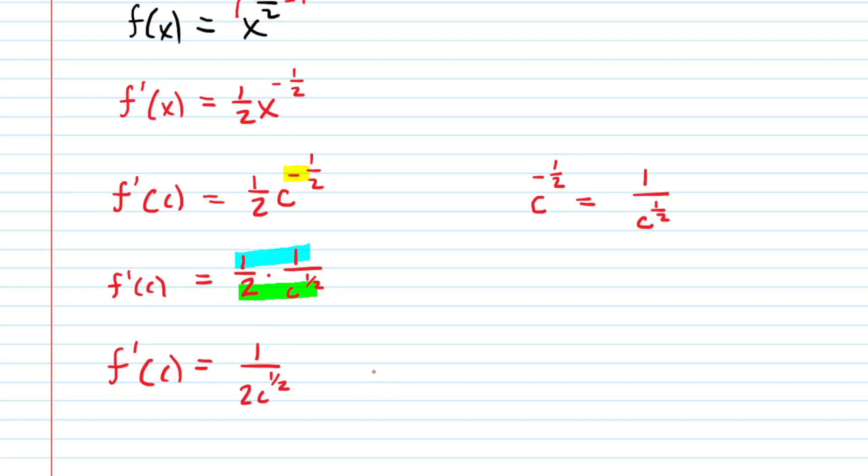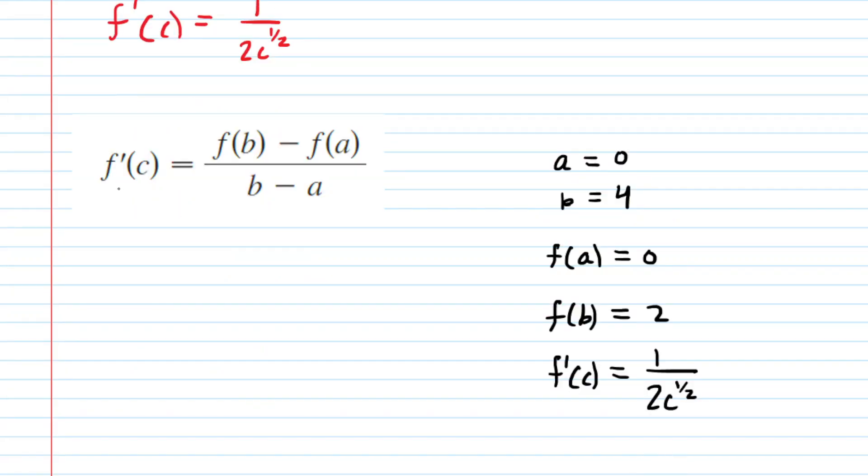So this is great, and now that we have this component we can go back to the conclusion of the Mean Value Theorem and plug everything in. So right here is the conclusion of the Mean Value Theorem, and then we have listed all of the components on the side. We're going to start plugging in. So f'(c) as noted was 1 over 2c to the power of 1/2, and this will equal our f(b), which was 2, minus our f(a), which was 0, and then this is all divided by b, which was 4, minus a, which was 0.